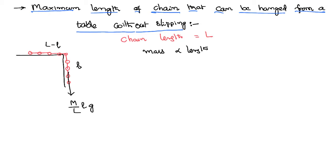This weight generates a tension or force in the chain, because of which the chain tries to move downward and slip off the table. As the motion is on the horizontal surface from left to right, friction automatically starts developing in the opposite direction. We know the frictional force equals μ times the normal reaction, assuming the surface is rough with coefficient of friction μ.